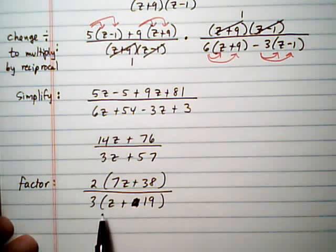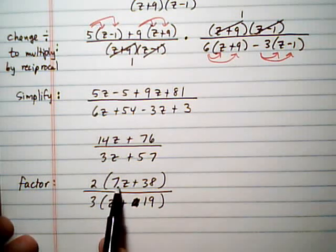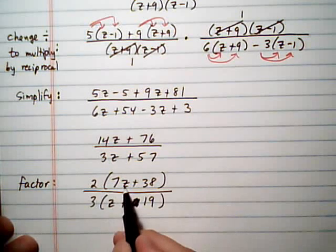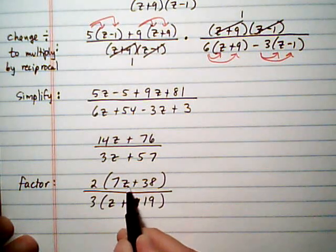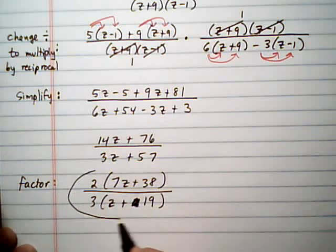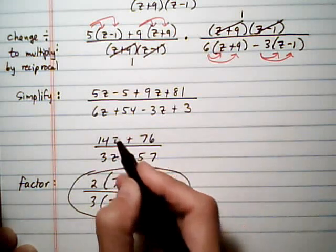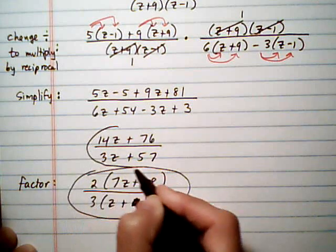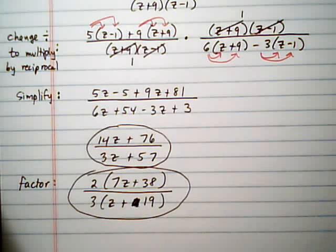And it doesn't look like anything, as far as common factors, will cancel out. 2 and 3. We can't cancel the z because we'd be reaching within something that's being added to something else. Therefore, it's not a common factor. Factors are always multiplied together. So that means we're done. So we're going to leave the answer here. Or if you see right away that nothing's going to cancel out, you can leave the answer here too. Either one of those is okay.